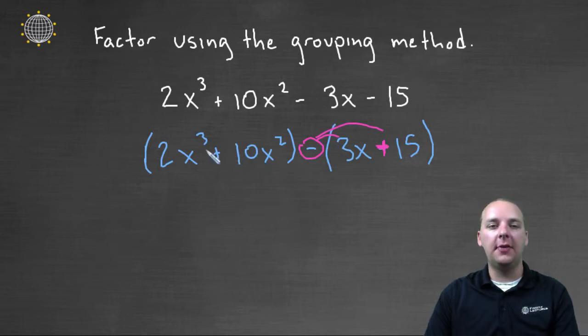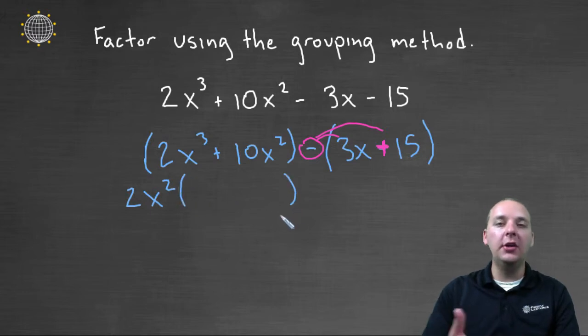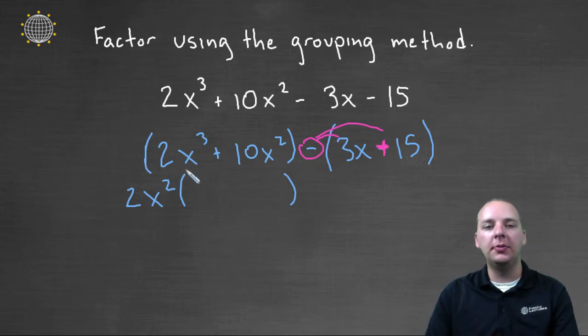We'll factor the GCF out of the first set of parenthesis, looks like we have a common factor of 2x². So if you factor, or you can say undistribute a 2x² out of these two terms, you'll be left with an x and a 5. 2x² times x would be 2x³, and 2x² times 5 would be 10x².